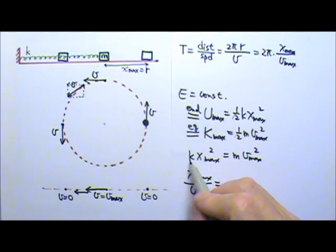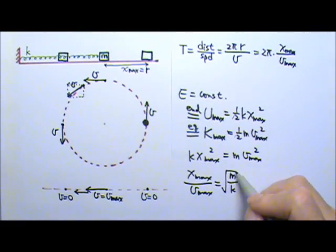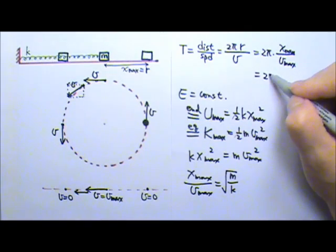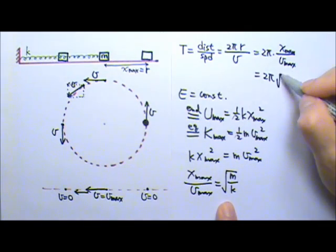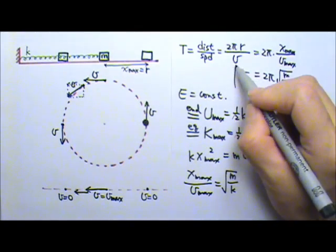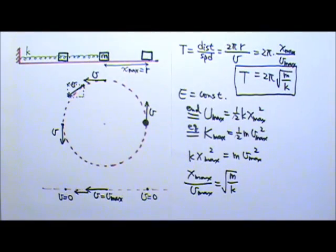Substituting into the period formula, we get T = 2π times the square root of m over k. That is the period equation for the spring-mass simple harmonic oscillator, and you will need to memorize this.